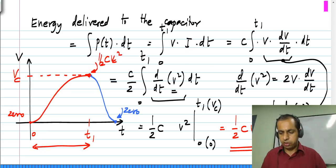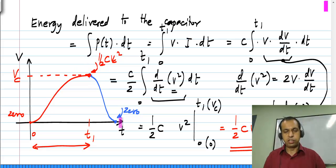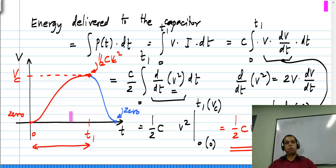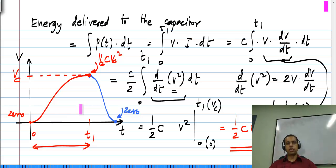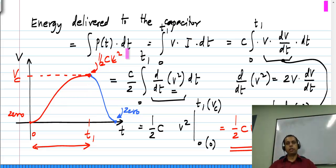You can charge a capacitor to a certain voltage Vc and then have it deliver energy to the rest of the circuit, so the capacitor absorbs negative energy in that phase. But to get to the starting point where it is charged to Vc you had to supply energy. Taking the net energy absorbed by the capacitor, it will be positive — the capacitor absorbs energy and it is passive. This is a useful application: you can charge it to a certain voltage and use it as a source of energy.